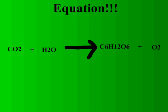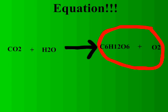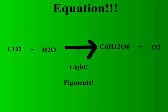But how do plants get from this to this? They need light, pigments to trap the light, and enzymes to drive the chemical reactions. It gets more complicated than that, however.